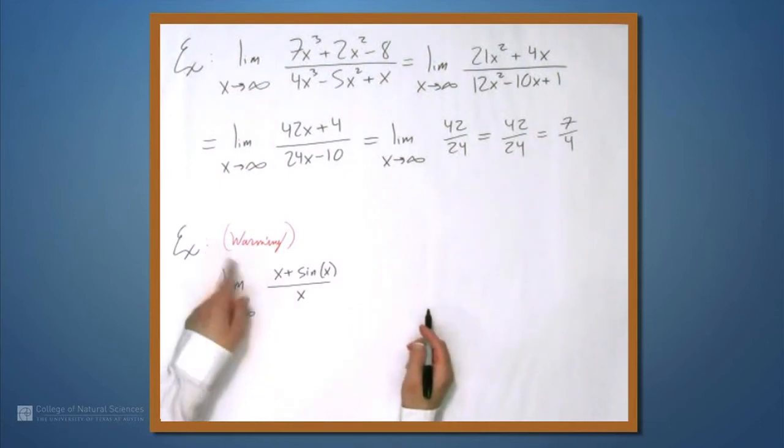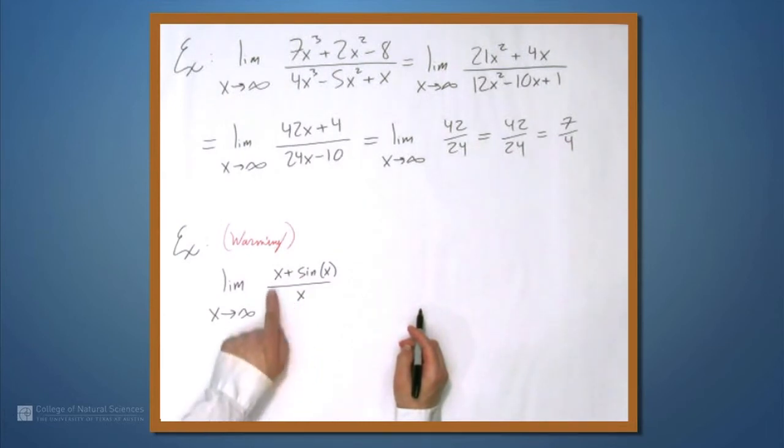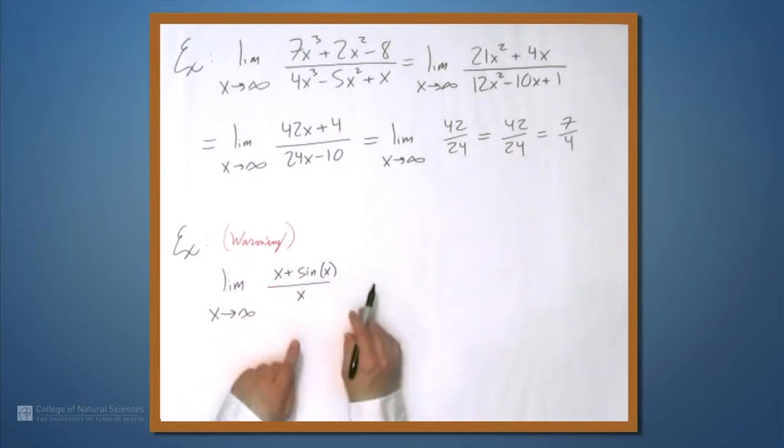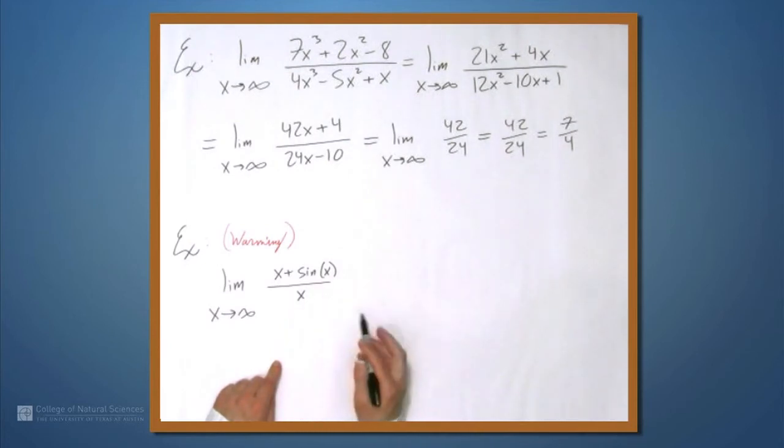Limit as x approaches infinity of x plus sinx over x. Now, it might be, just like the first example, you might see this and intuitively realize that the limit of this thing is 1. Because the x's grow and the sin never varies more than between negative 1 and 1. And so, the sin term matters less and less. So, this limit is actually going to be 1.